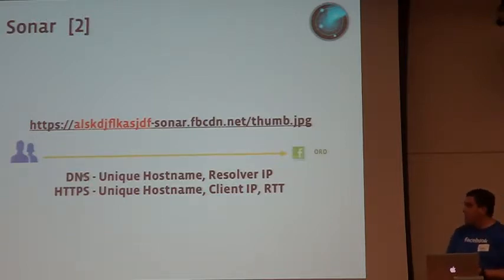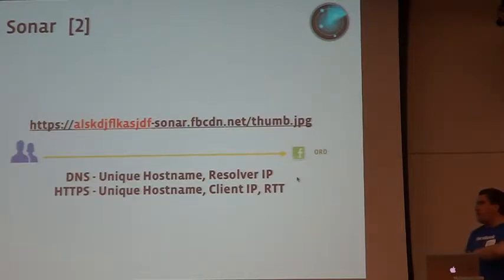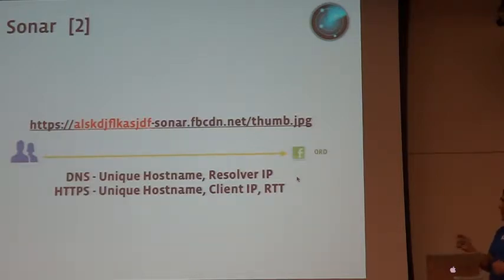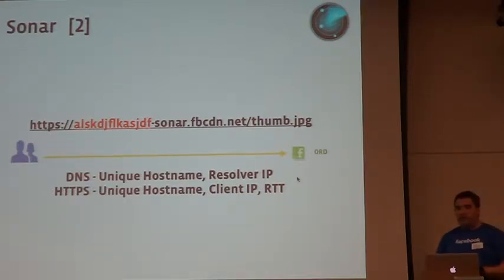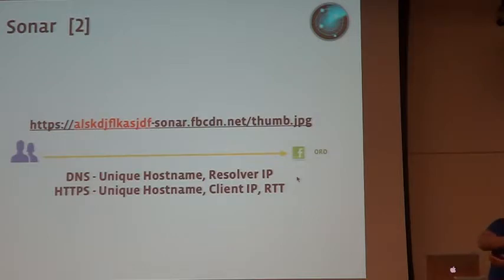When we have a DNS request, the only information we have is a unique hostname and the resolver IP address. A common misconception is that when somebody queries us for a hostname's IP address, people think we have the client IP address — but we do not. We only have the resolver IP address. When you ask your ISP for an IP address, the ISP's resolver asks us, and we never see the actual client IP.